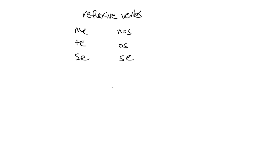Today we will look at reflexive verbs. We have seen two different sets of pronouns so far: direct object pronouns and indirect object pronouns. And here we have reflexive pronouns, and they go with reflexive verbs. When we are talking about reflexive verbs, what we are really talking about are verbs in which the action of the verb is directed back towards the subject.